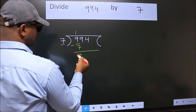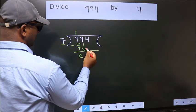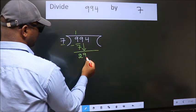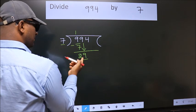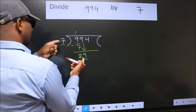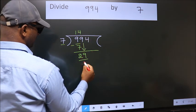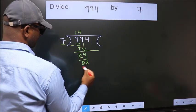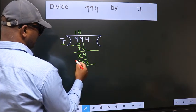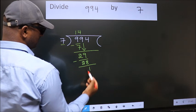After this bring down the beside number, so 9 down, so 29. A number close to 29 in 7 table is 7 fours 28. Now we subtract, we get 1.